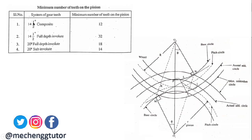A reference table gives minimum teeth on the pinion for standard gear tooth systems: for 14½° composite gear teeth the minimum is 12; for 14½° full-depth involute teeth it is 32; for 20° full-depth involute teeth it is 18; and for 20° stub-involute teeth it is 14. These values should be remembered as they appear in numerical examples.